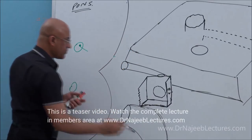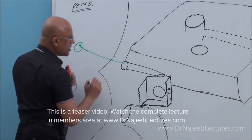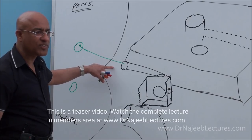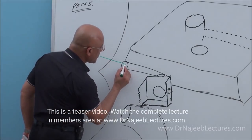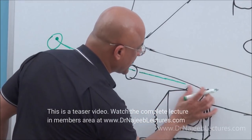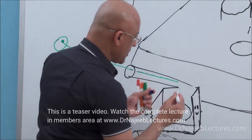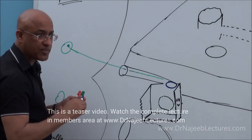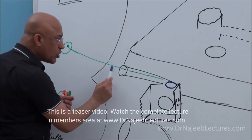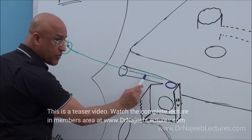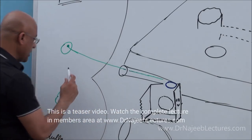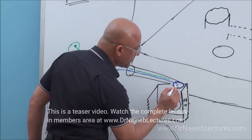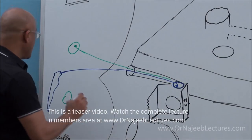The preganglionic parasympathetic fibers that are supposed to reach the greater petrosal nerve start from the superior salivatory nucleus. They go along with the 7th cranial nerve — specifically the component called nervus intermedius. These fibers are part of the nervus intermedius and they are going towards the geniculate ganglion. The geniculate ganglion has the cell bodies of sensory fibers. The nervus intermedius carries not only secretomotor preganglionic parasympathetic fibers but also sensory fibers — including taste fibers coming from the tractus solitarius.